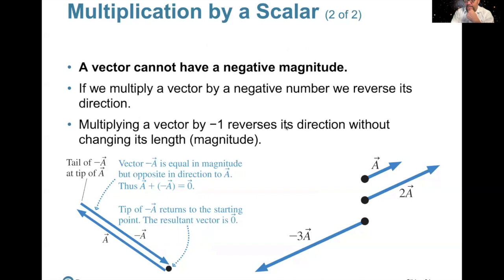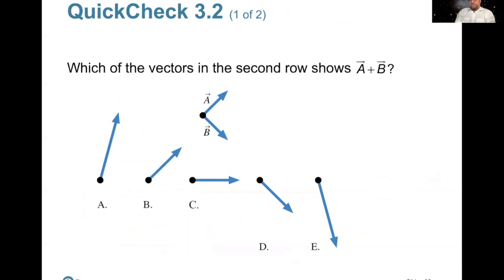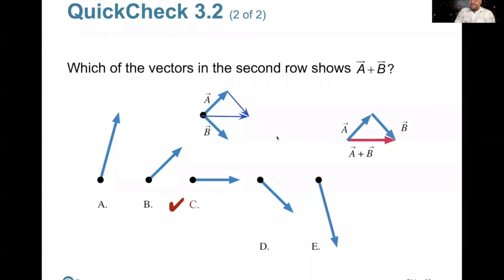Multiplication by a scalar: a vector cannot have a negative magnitude. If we multiply a vector by a negative number, we reverse its direction. Which of the vectors in the second row shows A plus B? Let's draw a picture. I'm going to draw a parallel of B and put it over here — same size, parallel. That means A plus B has to go like this. That's A plus B, and I'm thinking it's C. It looks an awful lot like C. It is C. A plus B — tail-to-snout rule.